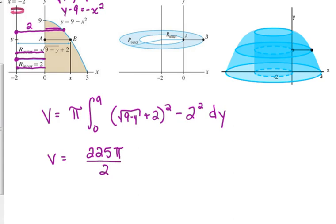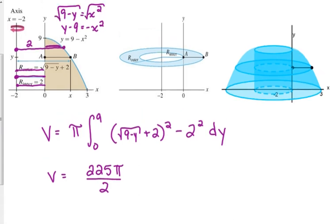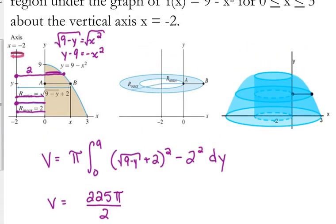I mean, like I said, it's the exact same premise. We're just doing it in terms of y. So, most of the time, you're going to have to solve your equation for x before you can do it. But it's the exact same process. Start on your axis of rotation. Draw to the furthest part of the region. That's your outer radius.